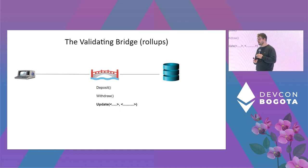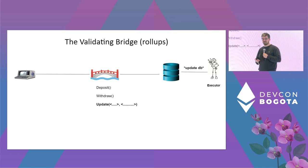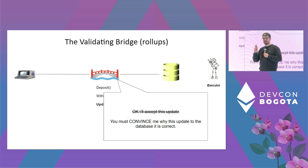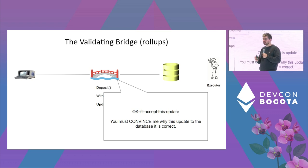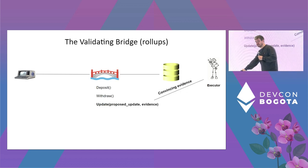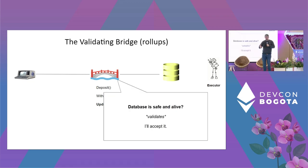If we categorize this as a bridge, we'd call it the validating bridge, because the bridge will independently protect the funds. An executor wants to update the off-chain database — they update it and propose an update to the bridge. The bridge will not blindly trust the executor regardless of who authorized the update; it must independently be convinced that this update is valid, correct, and that updates occur frequently. The executor must send convincing evidence.